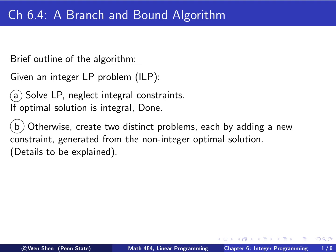Otherwise, we move to the next step. Then we would create two distinct problems, each by adding a new constraint. So we would form two new constraints, distinct, completely exclusive of each other. And then we make two new problems, and the problems will be generated from the non-integral optimal solution in the previous step. And the details on how to do that will be explained soon.